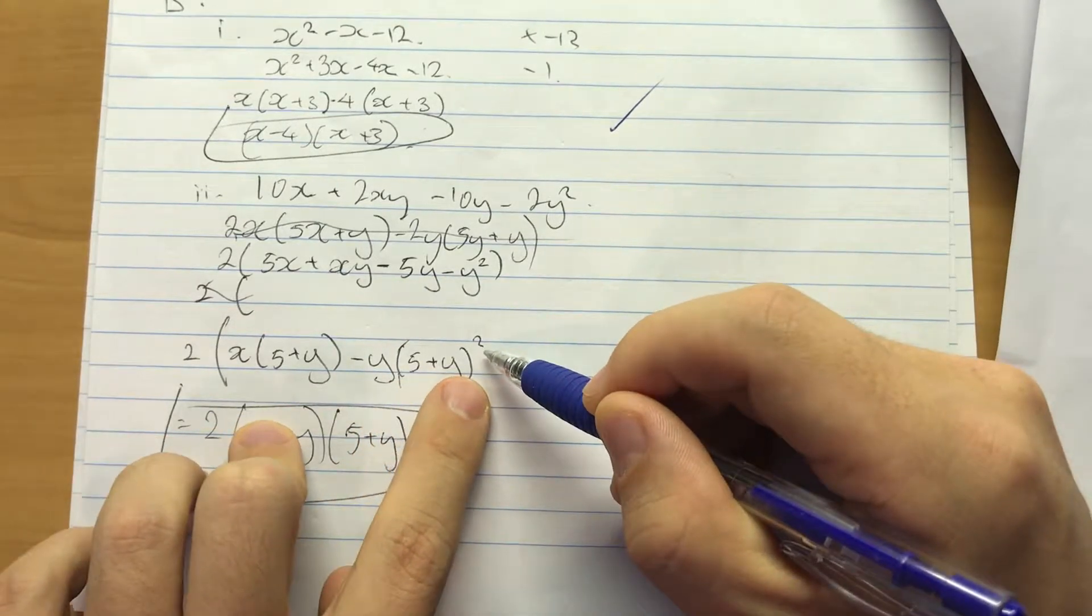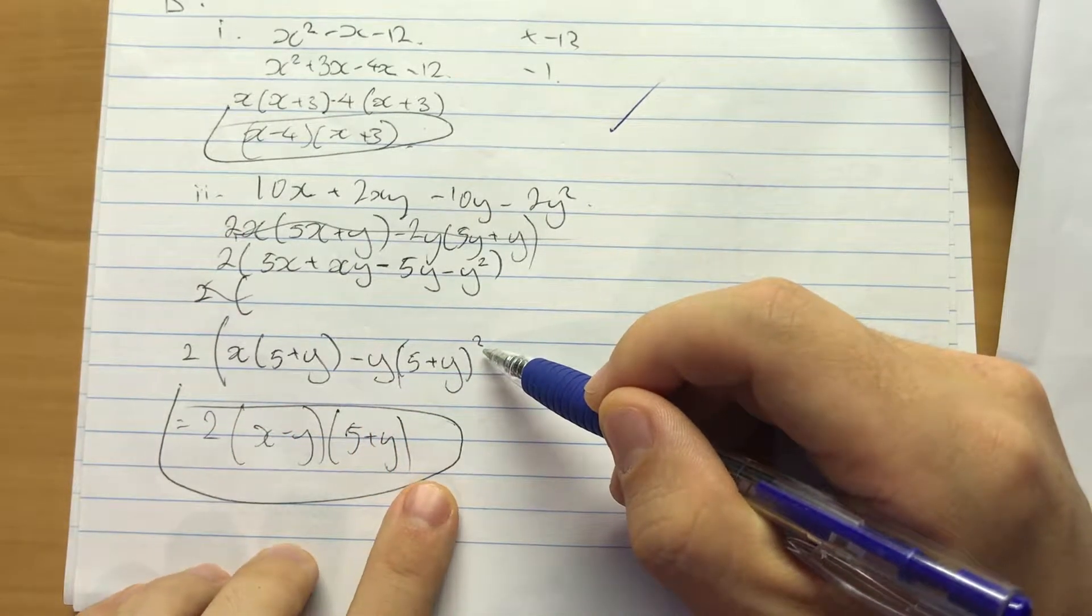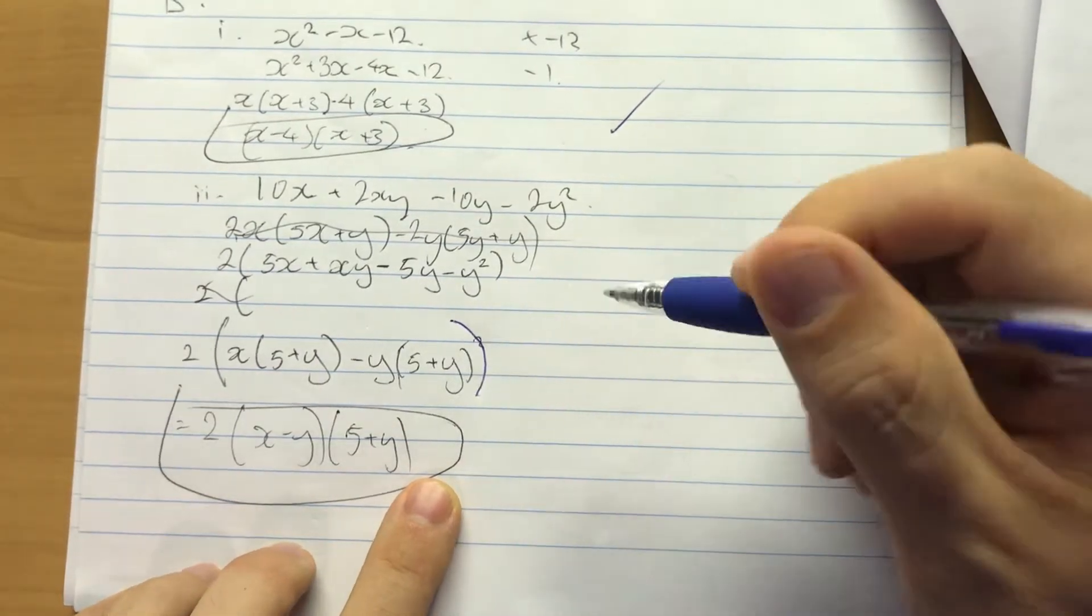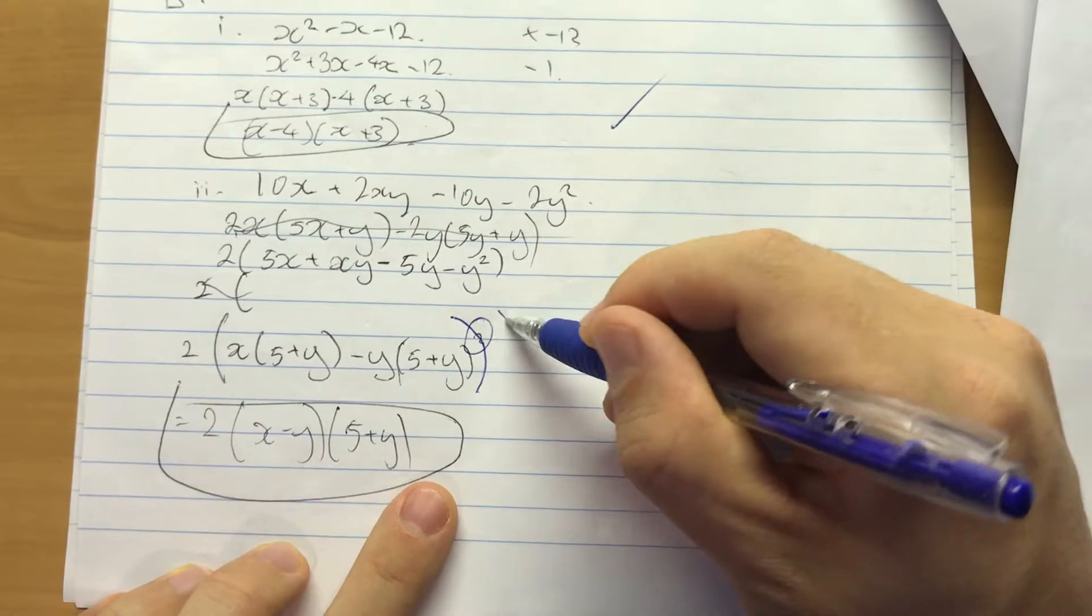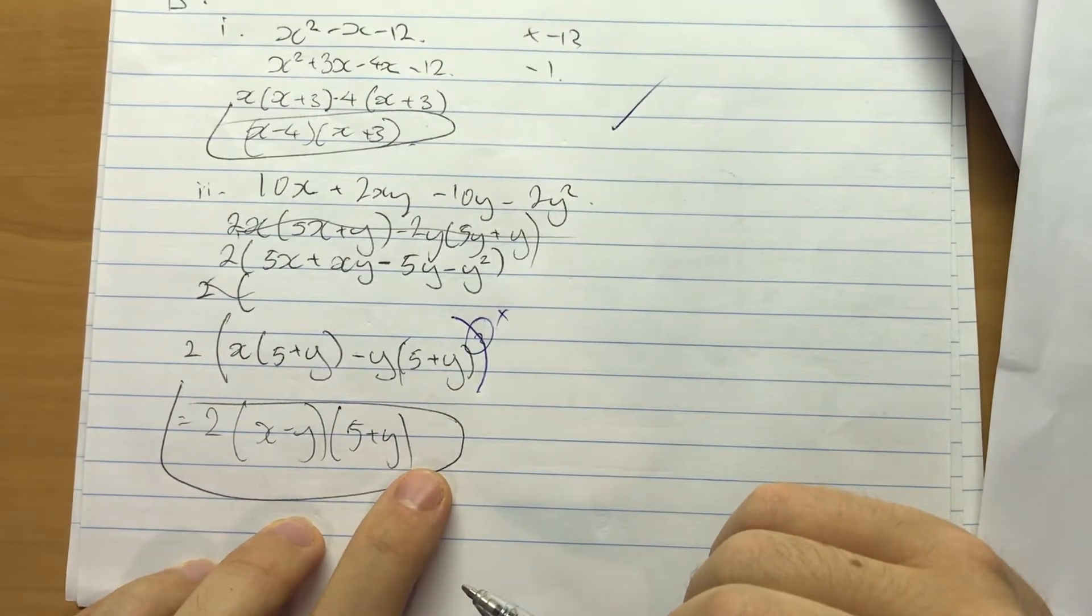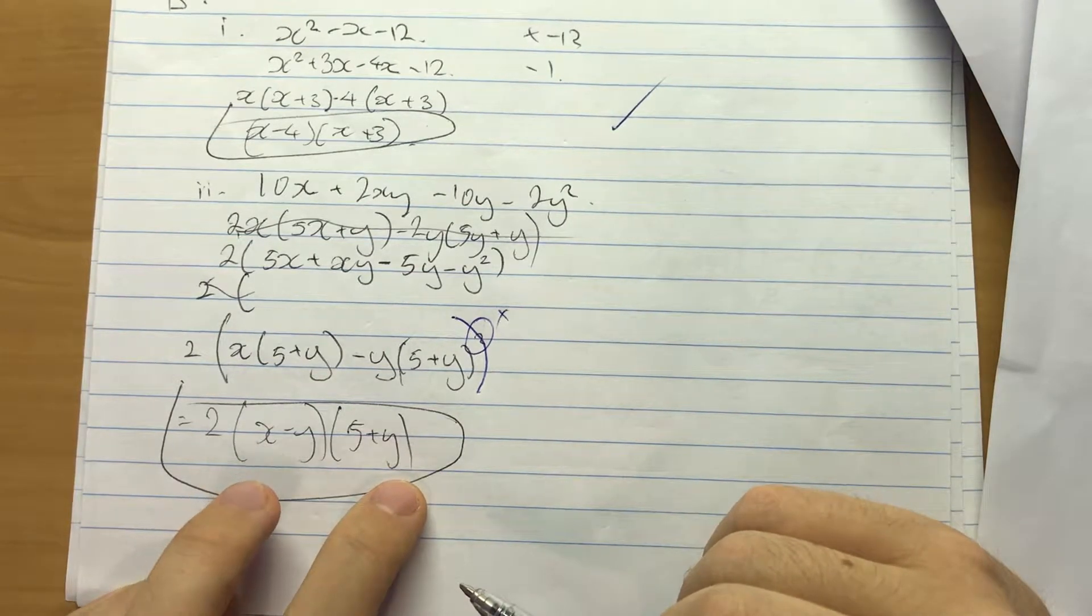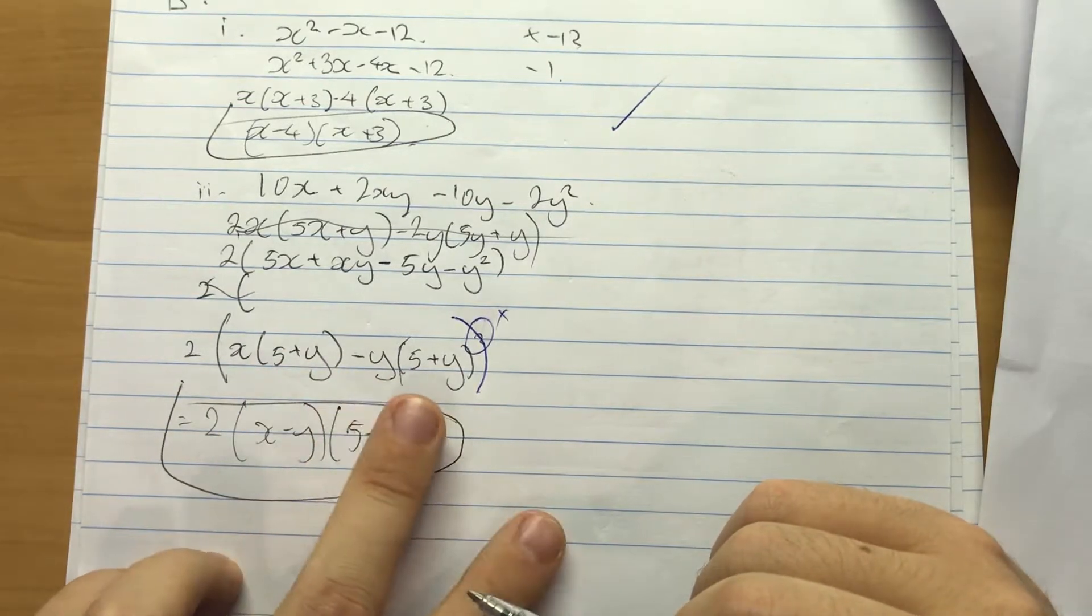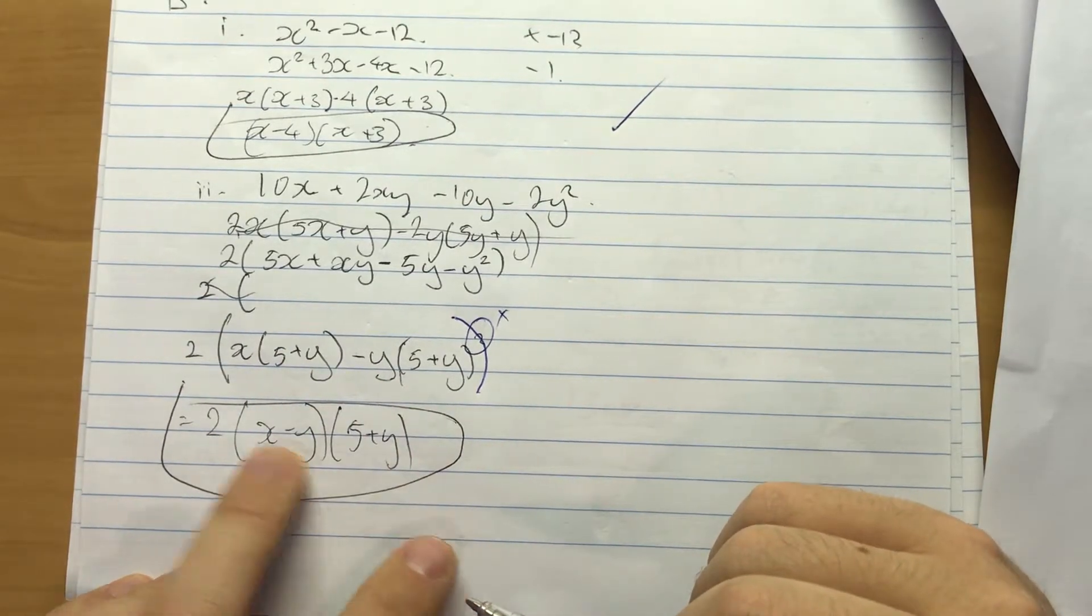I don't know why there's a square here. This is just, this is a typo. Okay, so this should be here. Now see there's a common factor of (5+y). So (5+y) times (x-y) times 2.